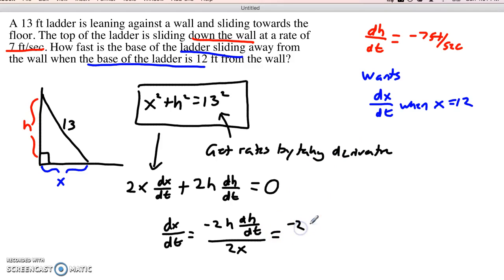Now we know two of these three variables. So let's plug in here, negative 2h. Well I don't actually know what h is, so I'll leave a space there for a minute. dh dt, that was given to us, it's negative 7 feet per second, so that's negative 7. I'll leave units off, we'll just put them back at the end. And then divided by 2x, well we're interested in when x is 12, so 2x is going to be 24.